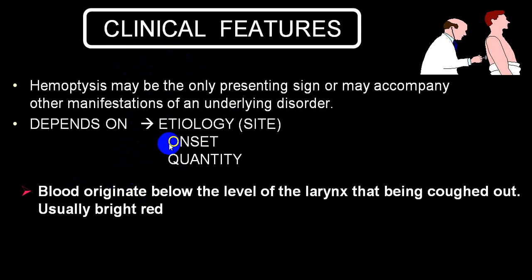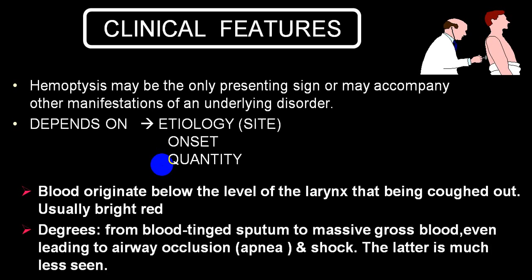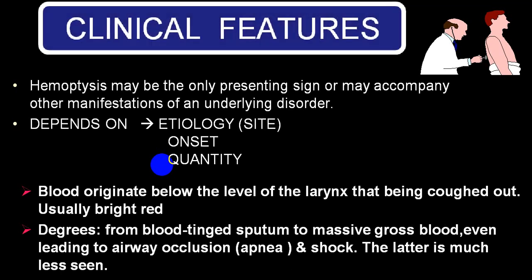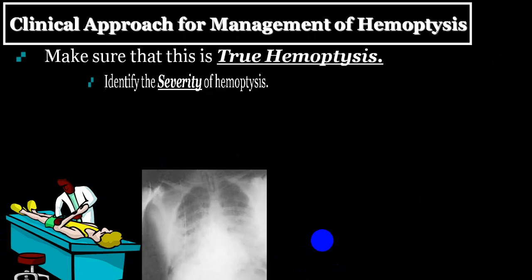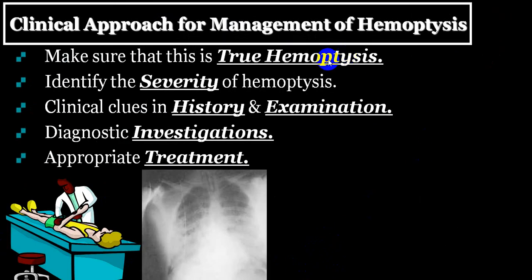In massive haemoptysis, along with haemoptysis, you will have symptoms and signs of hemorrhagic shock. Occasionally the person can get asphyxiated because of a blood clot blocking the tracheobronchial tree. The first step is to confirm it is true haemoptysis, assess the severity, take a proper history, perform a good examination, identify the etiology clinically, then investigate with X-ray, CT, HRCT, or angiography, and proceed with treatment.